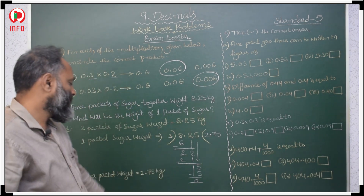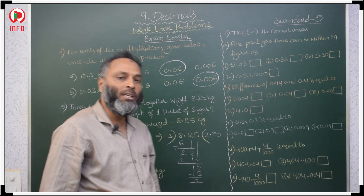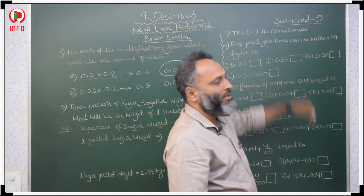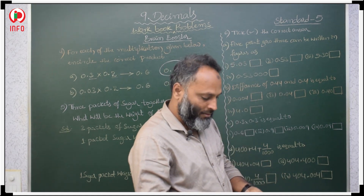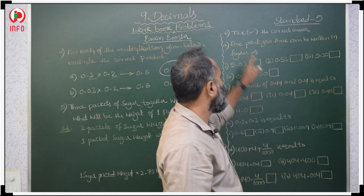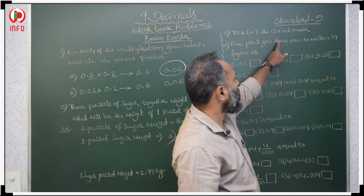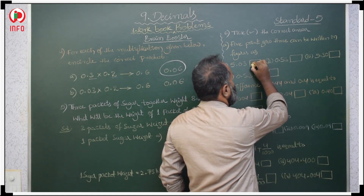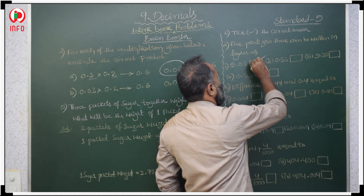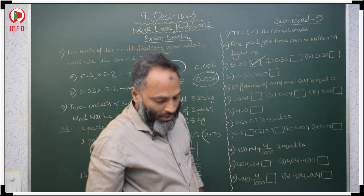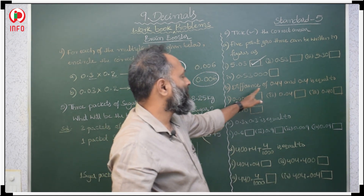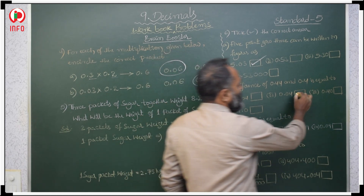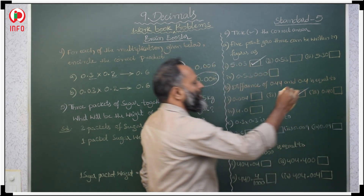1 sugar packet weight is 2.75 kg. Tick the correct answer: 5.03 is the right answer, the first option only. The next: the difference of 0.4 and 0.4 is 0.04. The second option is the right answer.